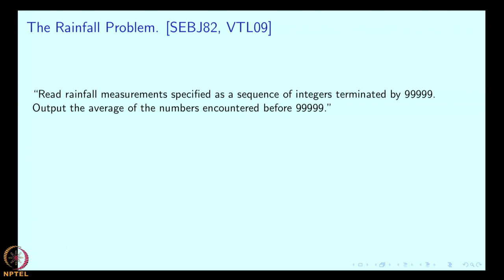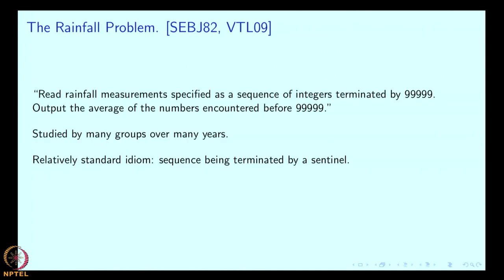It seems like a really simple problem — just a loop with a slightly tricky termination condition. Actually, it is not too tricky because 99999 is what is called a sentinel in many books and in the literature. The experience with it is fascinating, and it has been studied by many groups over this long period. Typically in all the studies done with this problem, it is really shocking that only 15 to 20% of students successfully write the program.